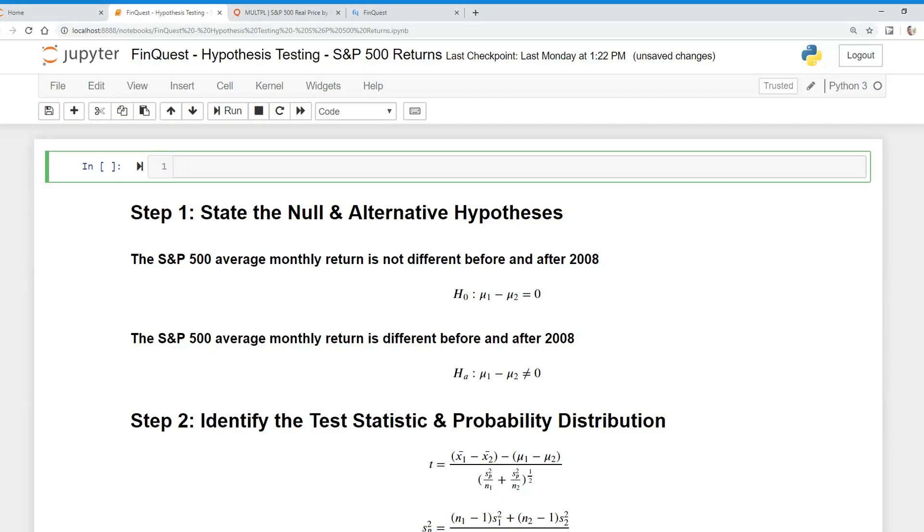Hey everyone, so today we're going to learn about hypothesis testing on stock returns. Specifically, we're going to look at S&P 500 returns and ask the question: was there a difference between the monthly returns before the end of 2008 and after the end of 2008 because of quantitative easing?